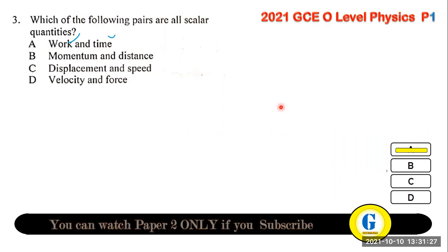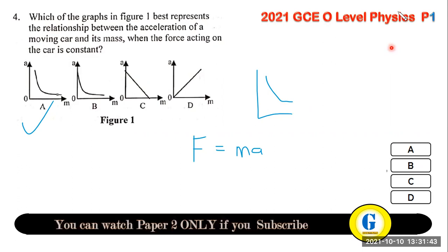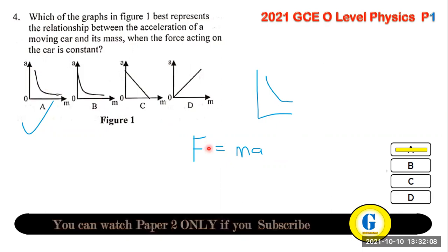Question 4: which graph best describes the relationship between the acceleration of a moving car and its mass at constant force? When force is constant, F = ma means mass and acceleration are inversely proportional — like Boyle's Law, it gives a curve. The answer is A.